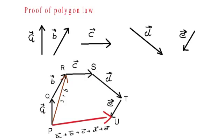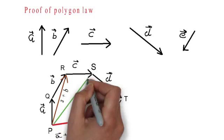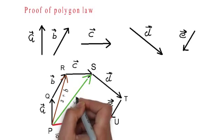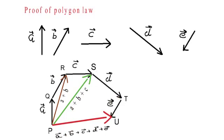Now if we look at the three points P, R, and S, they also form a triangle. In this triangle, PS vector will be equal to PR vector plus RS vector. PR vector is A vector plus B vector, and RS vector is C vector. Which means PS vector will be equal to A vector plus B vector plus C vector.